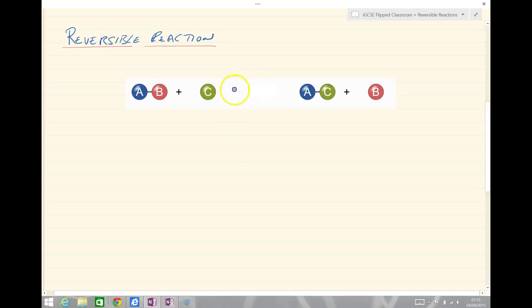We use the double headed arrow. So A and B plus C go to make AC and B. But those products can also react together and go in the other direction to make the reactants again, with the double headed arrow going to the left. So the double headed arrow indicates a reversible reaction. We remember these are our products, and on the left hand side we've got our reactants.